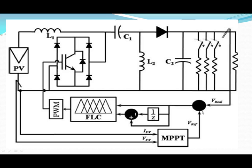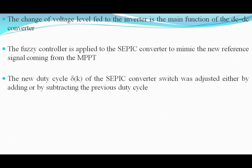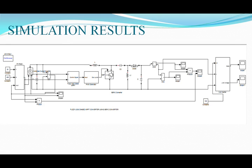From the inverter output, we take a real signal, and separately we take a reference signal. Both are compared and the result is given to the FLC. Before the FLC, we use a PI controller to adjust the error signal, which is then given to the PWM pulse generator. The PWM pulse controls the SEPIC converter, which gives its output to the inverter. In the inverter the output increases. These are our simulation results — we are using the SEPIC converter, fuzzy logic based PWM generator, and a three-phase multi-level inverter. Here are the Simulink diagrams.